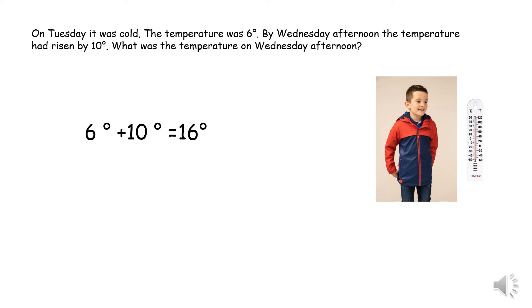On Tuesday the temperature was 6 degrees and on Wednesday it rose by 10 degrees. So we need to do 6 degrees add 10 degrees, which equals 16 degrees. So on Wednesday afternoon the temperature was 16 degrees.